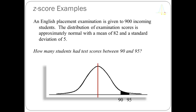We're going to convert the score of 90 to a Z-score and look up the area between the mean of 82 and 90. We're going to convert 95 to a Z-score and use the Z-table to get the area between 82 and 95. Then we're going to subtract one area from the other to get that shaded piece, which is the proportion of students who had scores between 90 and 95. We'll multiply that by 900 to get an approximation of the number of students in that region.